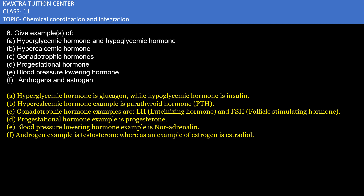The question here asks for examples of hyperglycemic and hypoglycemic hormones, hypercalcemic hormone, gonadotropin hormones, progestational hormone, blood pressure lowering hormone, and androgen and estrogen. Before starting the answer, let me give a brief about what hormones are. Hormones are chemical messengers which secrete directly into the blood and act on different aspects of body functions and processes.